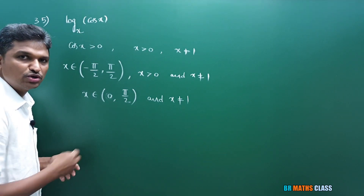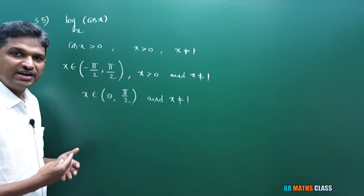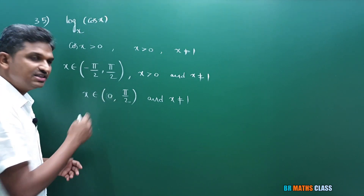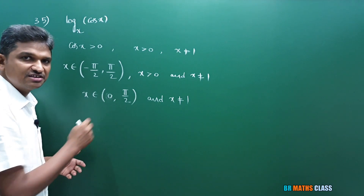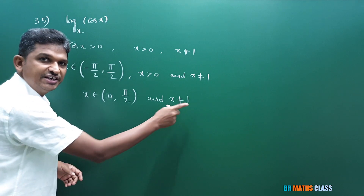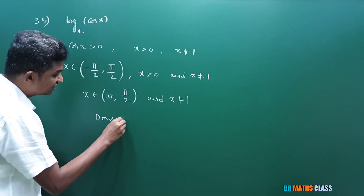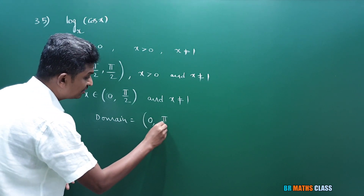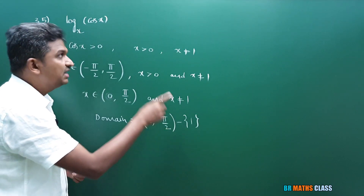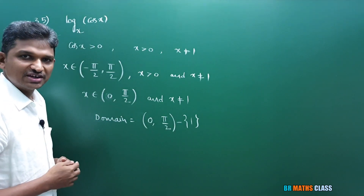The interval 0 to π/2 means 0 to 90 degrees. Here 1 means 1 radian, which is approximately equal to 57 degrees. Since 57 degrees is present in this interval, but x cannot be 1, we need to remove 1 from this interval. So the domain of this function is the open interval (0, π/2) except 1. Whenever we take an x value in this interval, this function is defined — that's why this is known as the domain of this function.